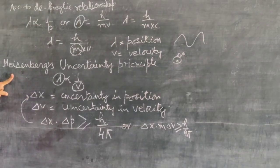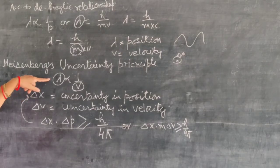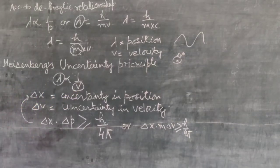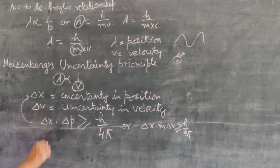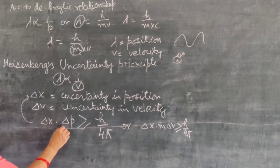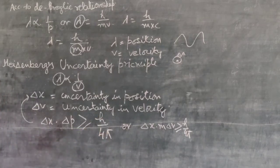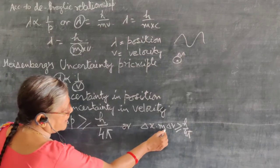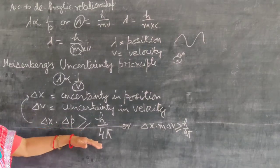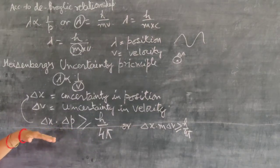Repeating the Heisenberg uncertainty principle: the position is denoted by lambda and the velocity is denoted by v. For the subatomic particles which have insignificant mass, their position and velocity cannot be determined precisely simultaneously. The mathematical expression is delta x into delta p greater than or equal to h upon 4 pi, or equivalently delta x into m delta v greater than or equal to h upon 4 pi.